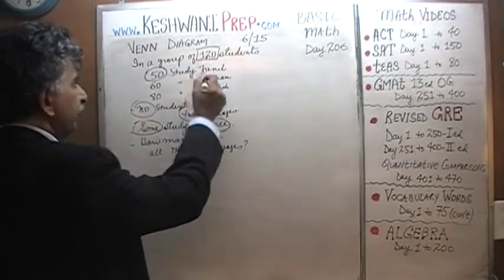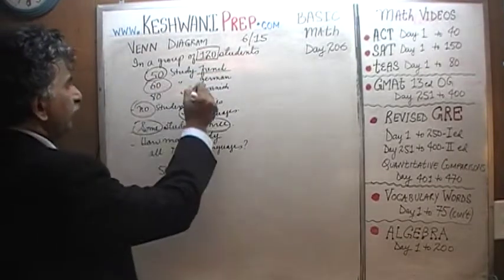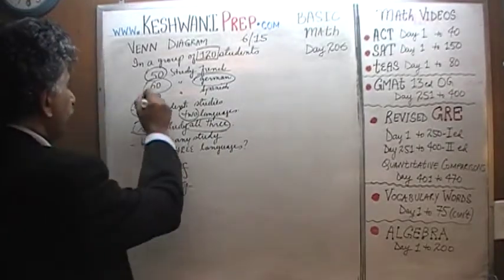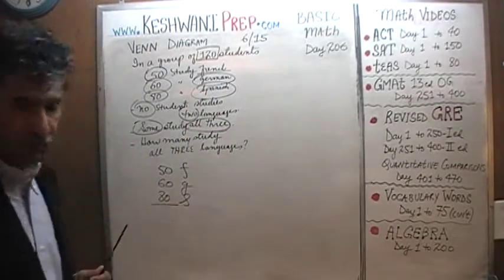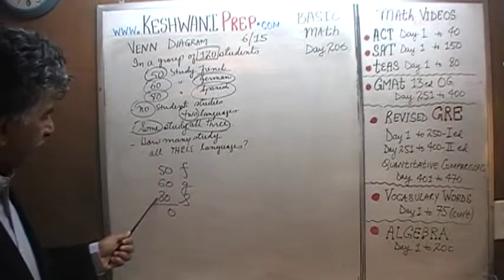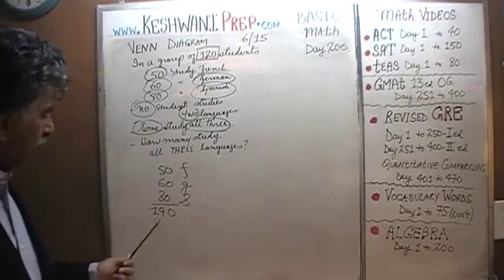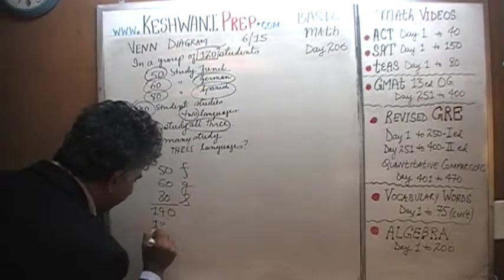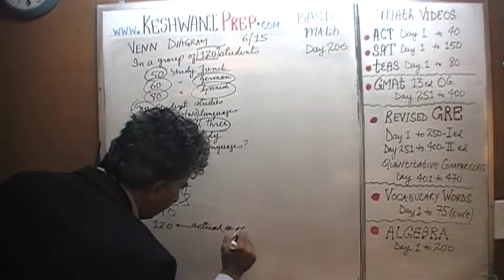We are told that we have 50 people who study French, 60 who study German, and 80 who study Spanish. Let's add them up: zero, 6 plus 8 is 14, 14 plus 5 is 19 — we get 190. But in reality we only have 120 students. 120 is the actual number of students.